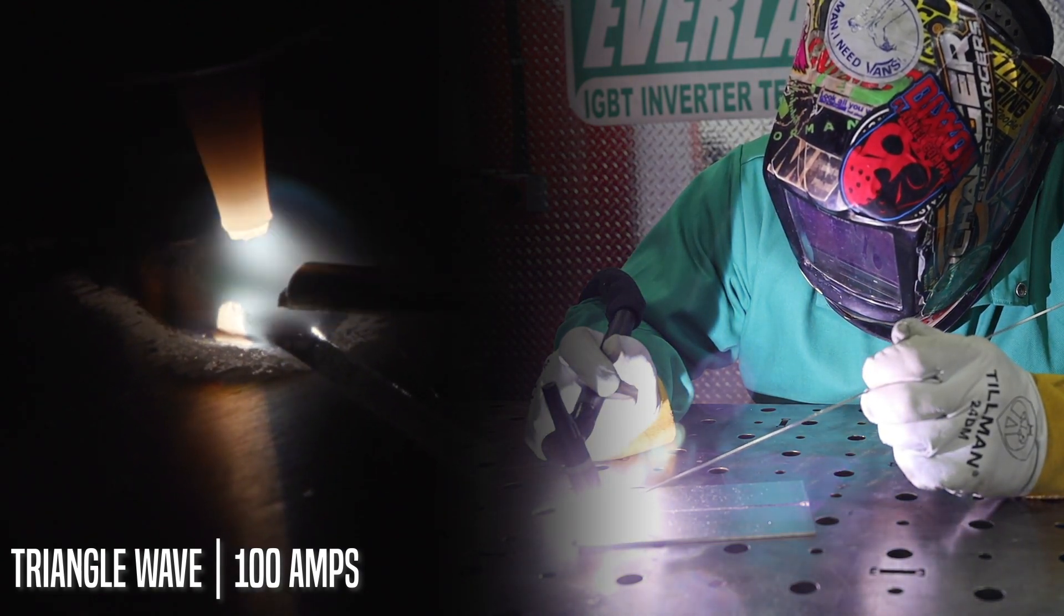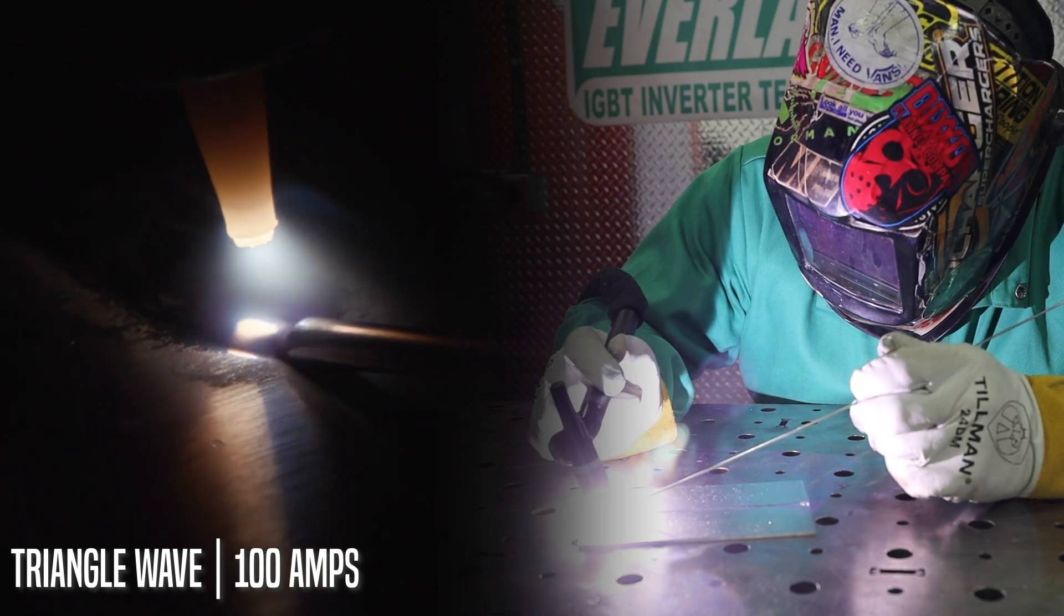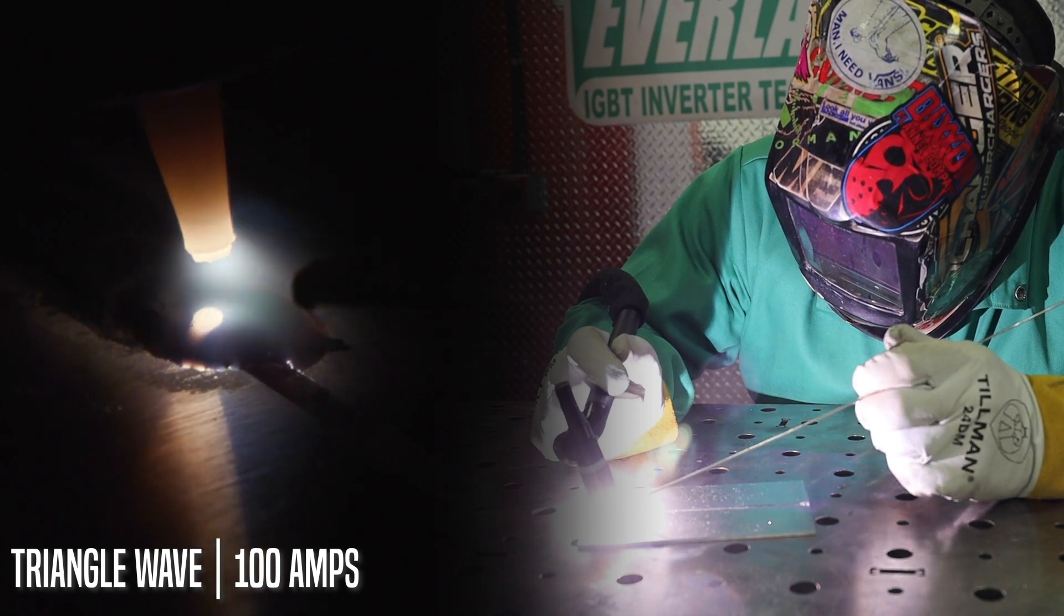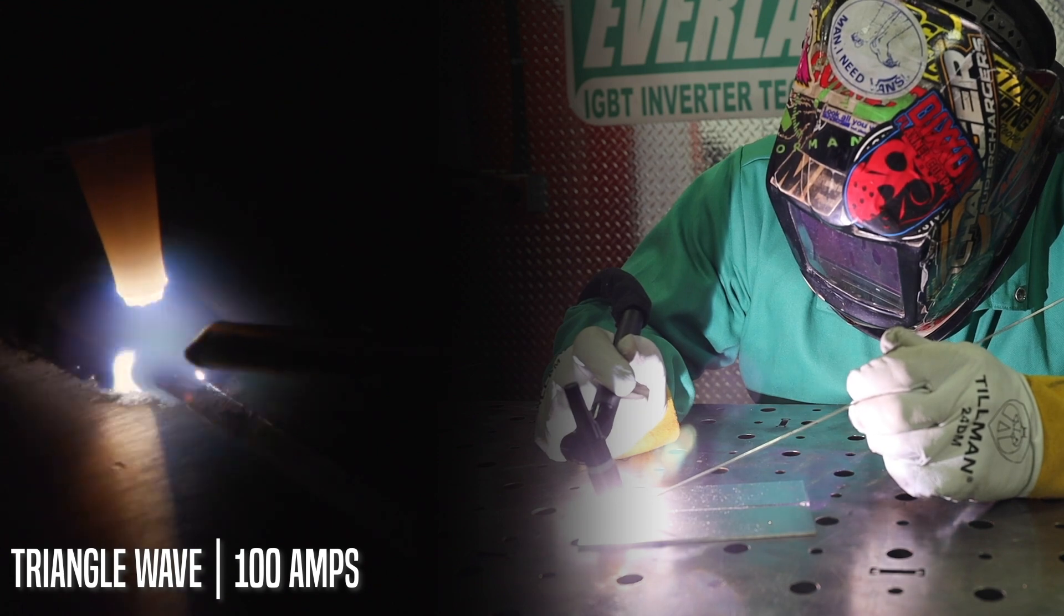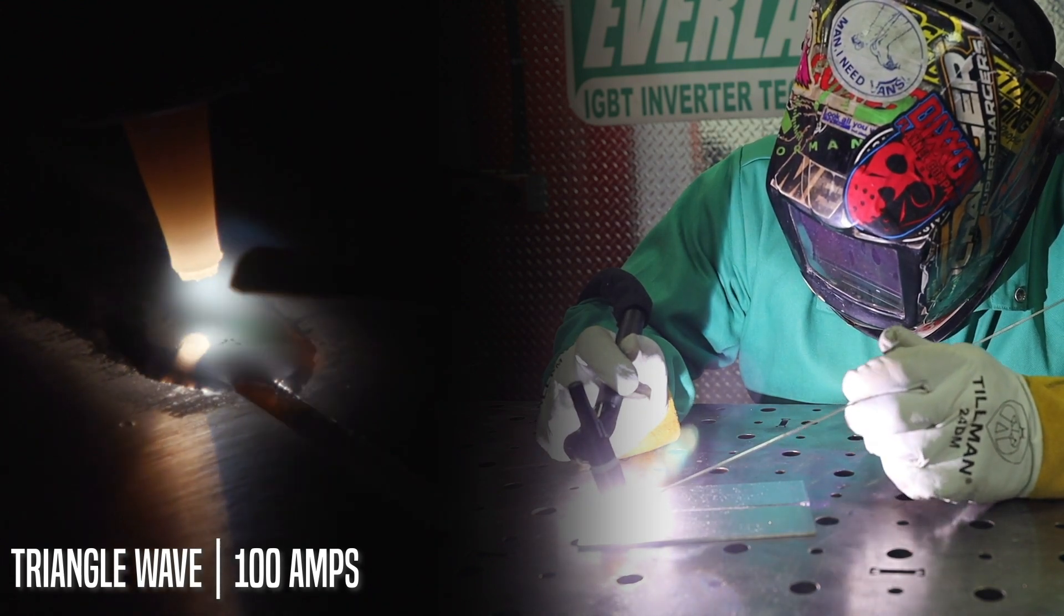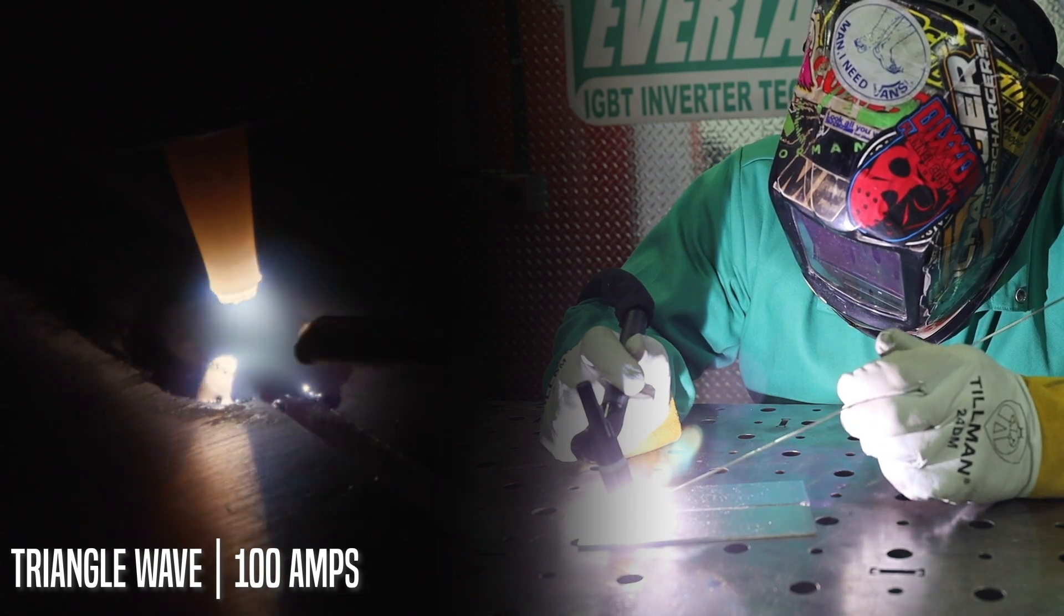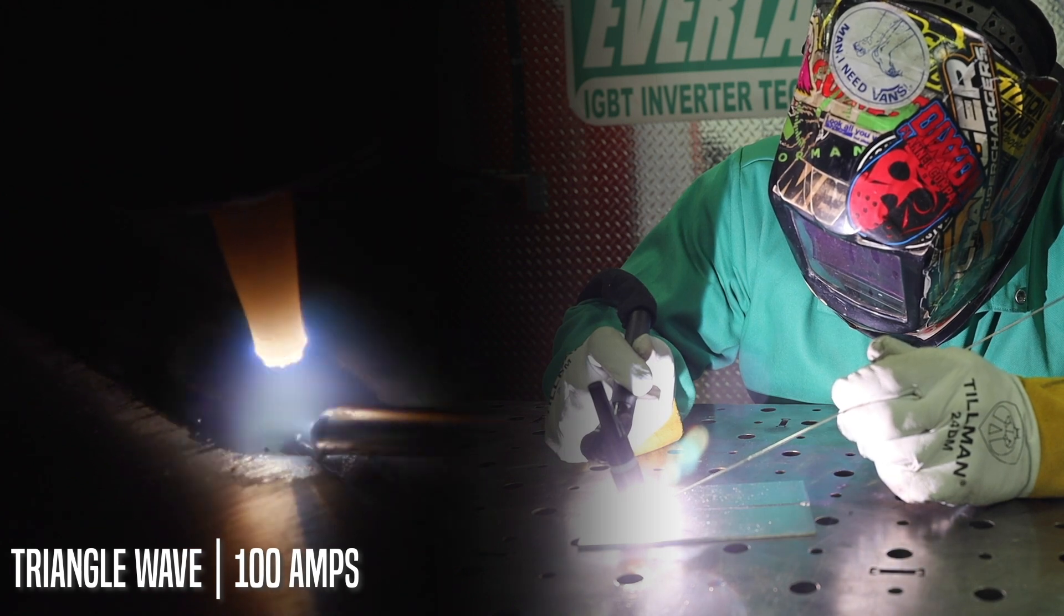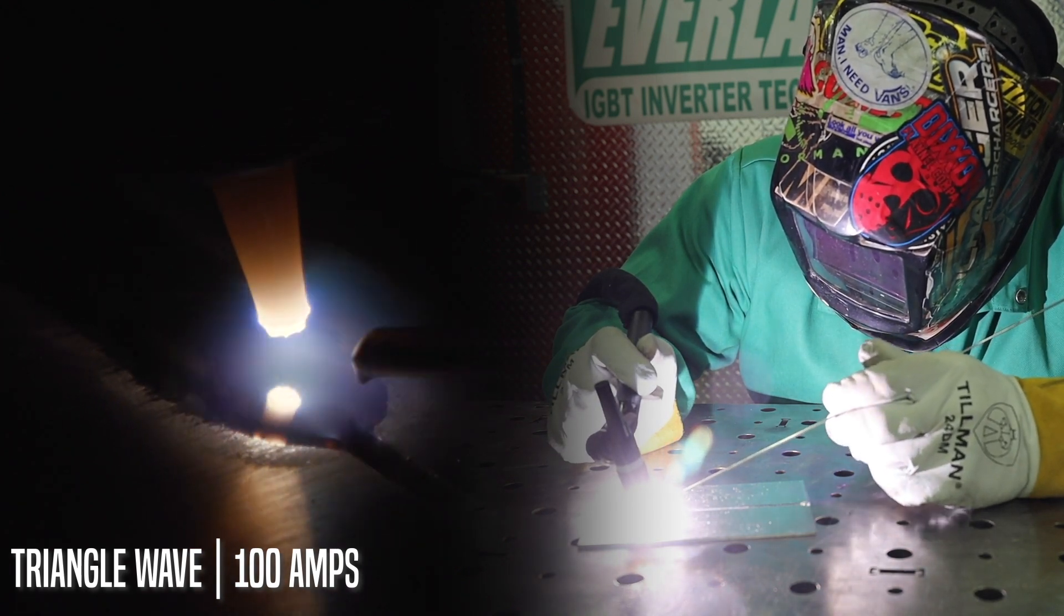Here we go. Nice stable arc. Still at 100 amps here on triangle wave. You can see it's a little sluggish forming the puddle, having to labor a little bit here as we make this run. Still a nice stable arc. It's just a little slow. So you can really see the reduced heat input here with triangle wave. Let's go back to the machine. We'll step up our amperage, come back and make another run.